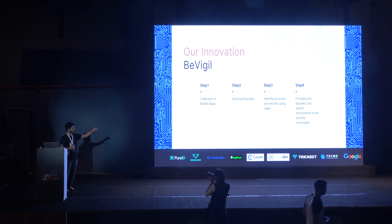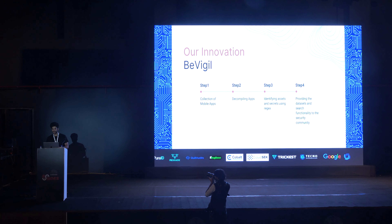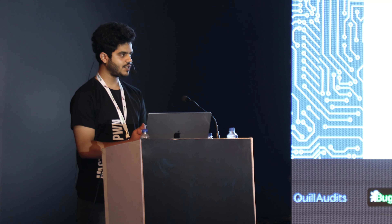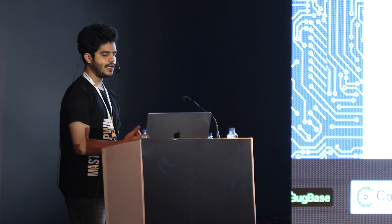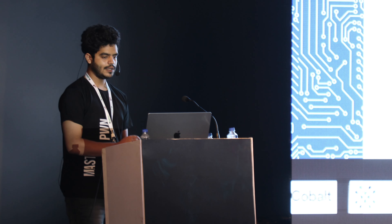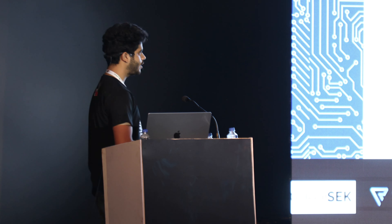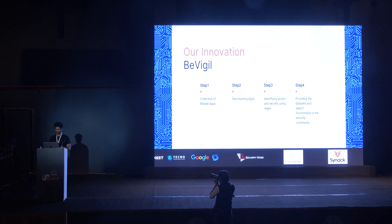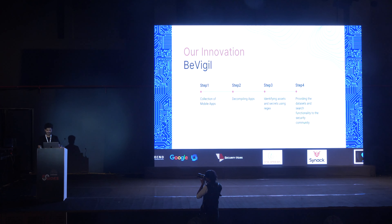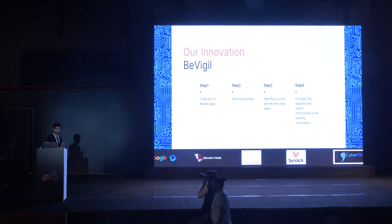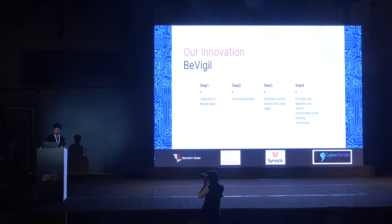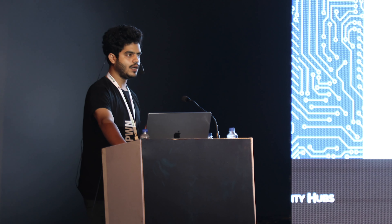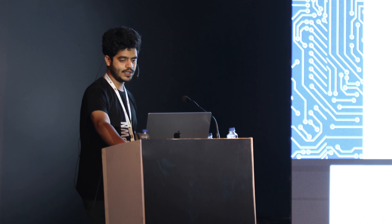Step one of our research was collection of mobile applications. We used the Play Store for the majority and some third-party app stores as well. Right now we've indexed more than a million Android applications. Step two was decompiling all these applications using JDX. After decompiling, once we had the source code, we did some static scanning. The focus was on identifying assets and secrets from the source code, so we came up with a list of more than 250 regex patterns and ran them on the source code of all applications.